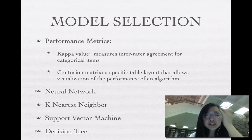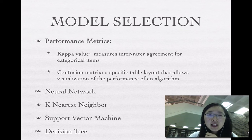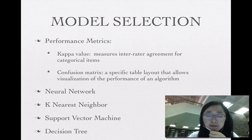For the model selection, I first define the performance metrics. I use the kappa value. Kappa value measures inter-rater agreement for categorical items. And I also use confusion metrics. It is a specific table layout that allows visualization of the performance of algorithms.